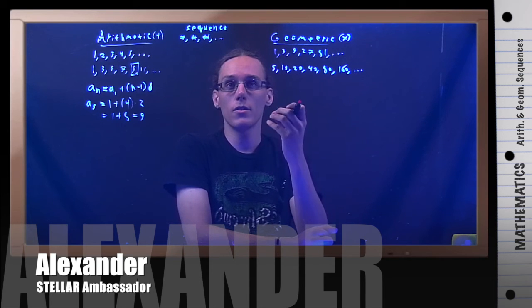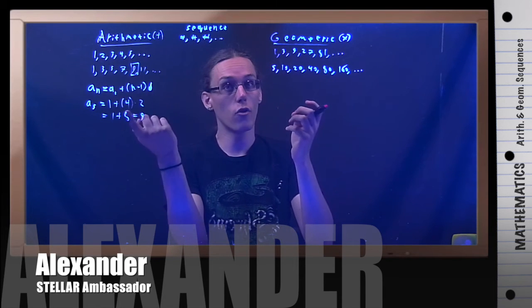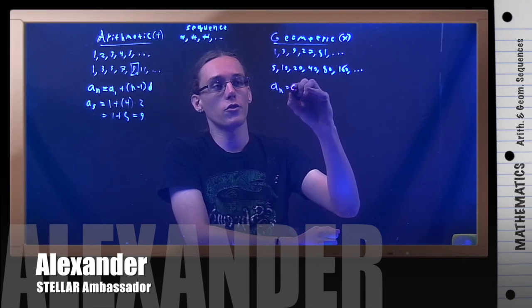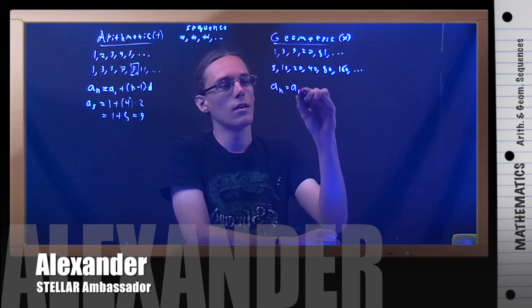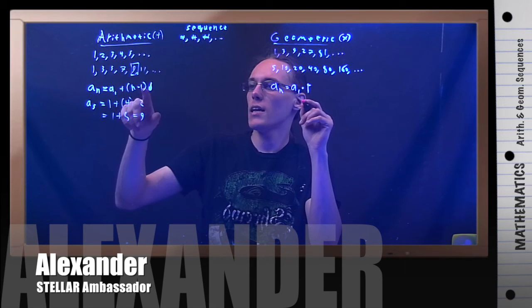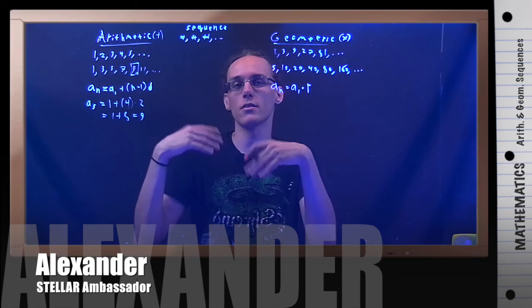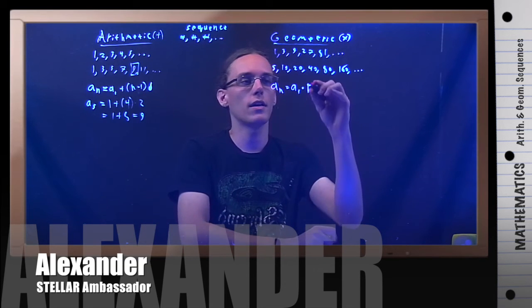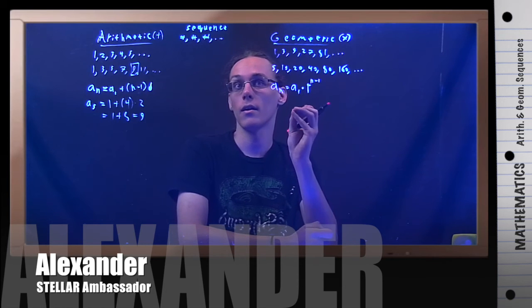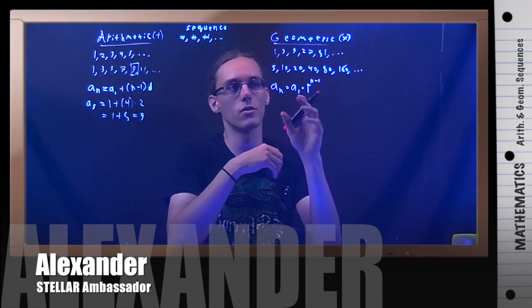So, again, in geometric, what you do is multiply. So, if you want a formula for this, then for any term, you have your first term, always your first term, times some common ratio. And just like before, we did n minus one, because it's one less is the number of times we added. We're going to do n minus one as a power here for how many times we multiply. Remember that repeated multiplication is just an exponent.